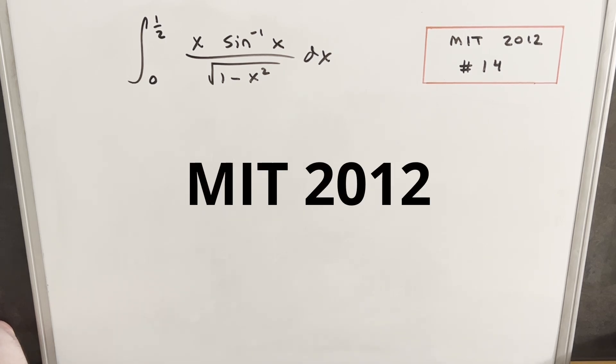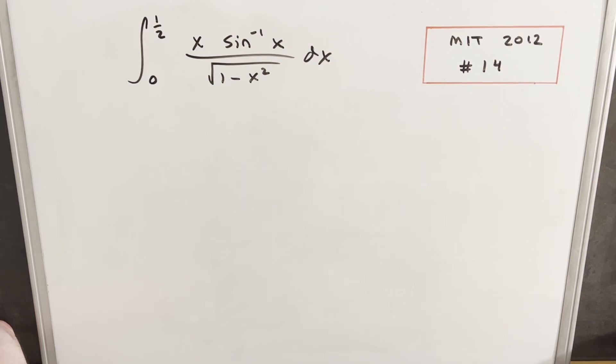Okay, today looks like we have another integral. This one's from MIT 2012, problem 14. We have the integral from 0 to 1/2 of x arcsin x over square root of 1 minus x squared dx.